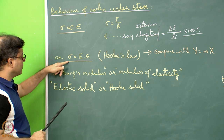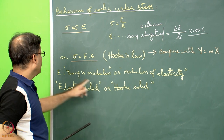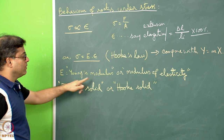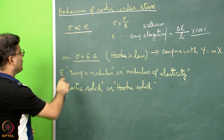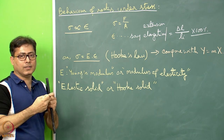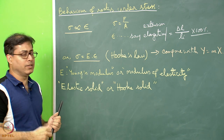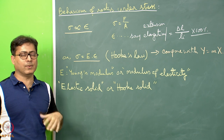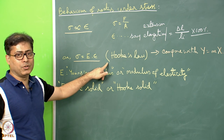Those solids which follow this relationship are called elastic solids or Hookean solids, and the proportionality constant E can be called the Young's modulus or the modulus of elasticity. This is true for a certain amount of stress. If the stress is too high and the spring snaps, this relationship may not hold true. Hooke's law is not applicable for all solids, but for certain solids approximately this can be found to be true in the laboratory.